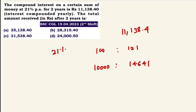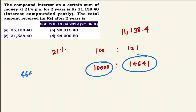At the end of 2 years, the difference portion is 4,641, and that corresponds to Rs.11,138.40 as the compound interest.